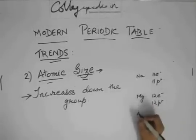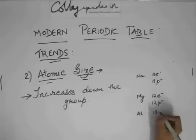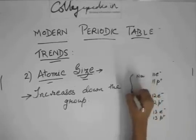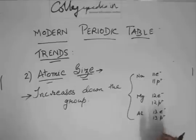Then we have aluminum, 13 electrons, 13 protons. These are belonging to the same period, which is period 3.